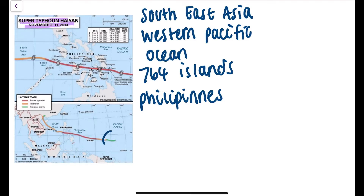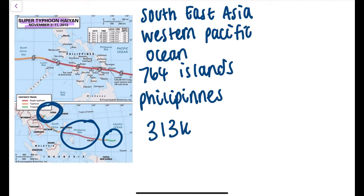It originated in the Western Pacific Ocean, started out as a typhoon and increased to a super typhoon — a Category 5 storm, which is the maximum on the Saffir-Simpson scale.